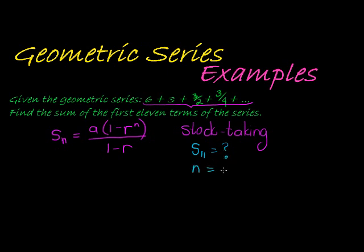Well, they tell us we want the first 11 terms, so yes, we have N is 11. Do we have A? A is our first term. Yes, our first term is 6. And do we have R, our constant ratio? Well, we can quickly go and calculate it. Term 2 divided by term 1 is 3 over 6, or 1 over 2. So there we have it.